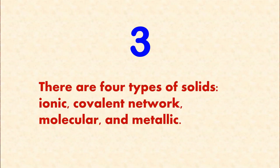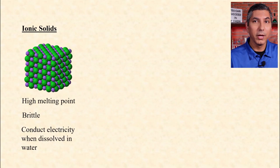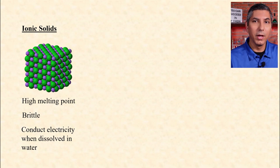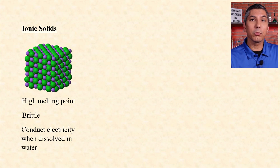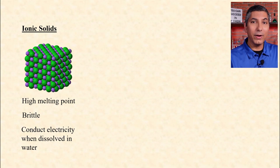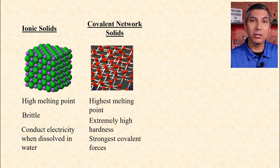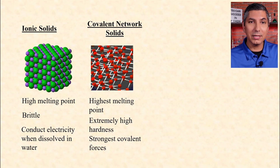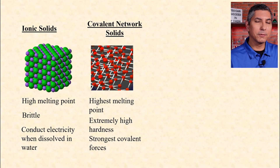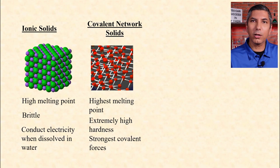Number 3. There are four types of solids: ionic, covalent network, molecular, and metallic. Ionic solids have a fairly high melting point — when you hit them with a hammer, they're likely to shatter. While ionic solids don't conduct electricity in the solid state, they do conduct electricity after being dissolved in water; that's why they're called strong electrolytes. Covalent network solids generally have the highest melting point of all, with extremely high hardness — think diamond or silicon dioxide. Their particles are bonded together in multiple directions and dimensions.